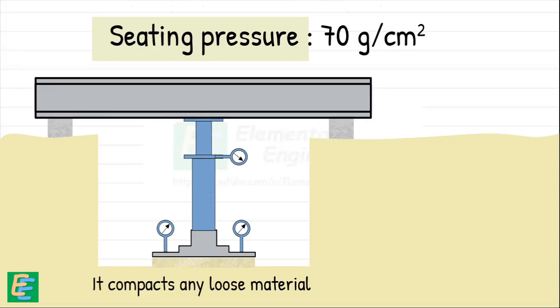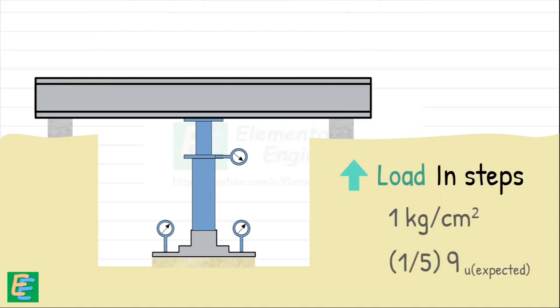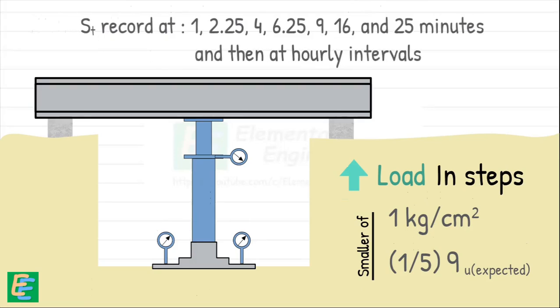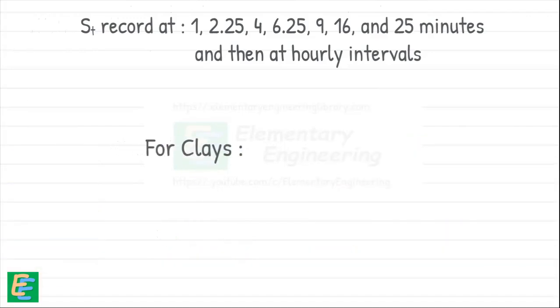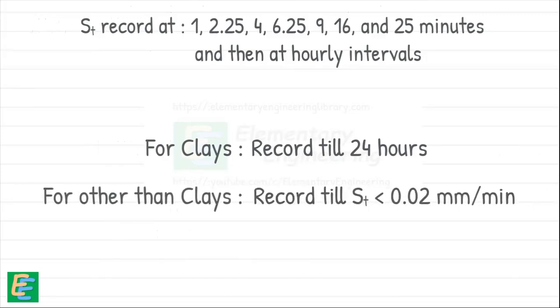Now we begin our test by gradually increasing the load on the plate. The load is increased in steps of either one kilogram per centimeter square or one-fifth of the estimated ultimate bearing capacity, whichever is smaller. At each load increment, we record the settlement of the plate at specific time intervals—initially in a few minutes and then at hourly intervals. If we are testing clay, we continue recording for 24 hours since clay settles slowly over time. If the soil is other than clay, we stop recording when the rate of settlement becomes very small and drops below 0.02 mm per minute, but the load is kept for at least an hour.